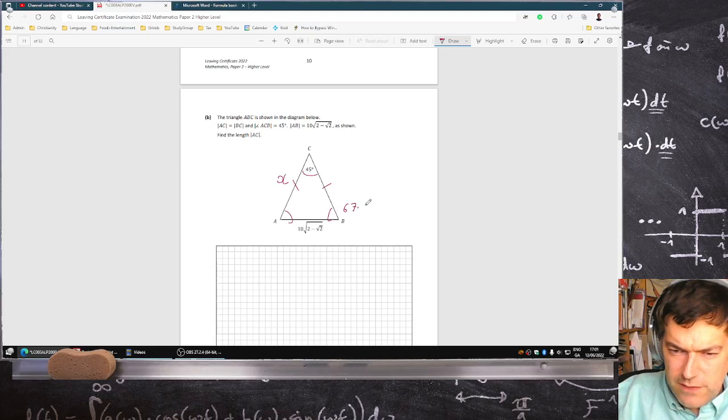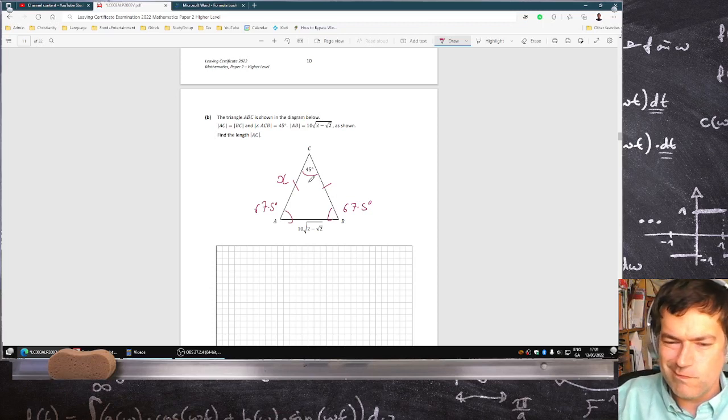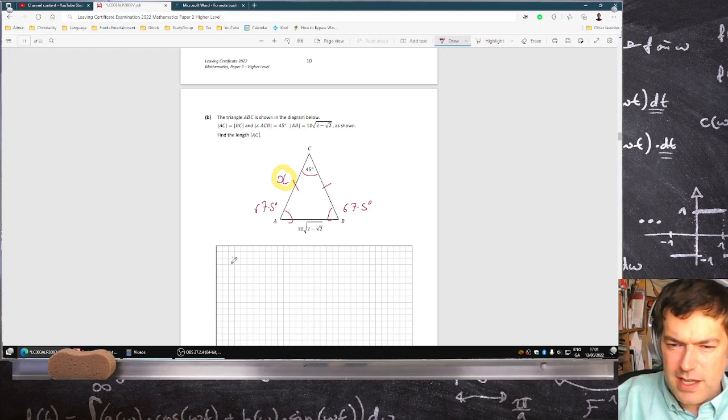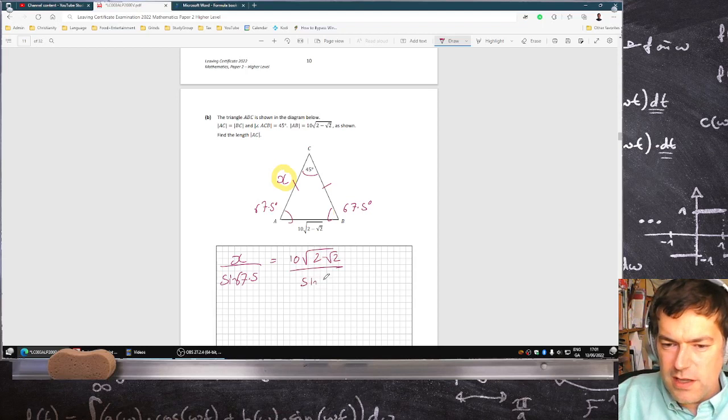67.5 degrees for both of those. So do I want to use the sine rule? Is that possible? We could say x over sine(67.5°) equals 10√2 - √2 over sine(45°).